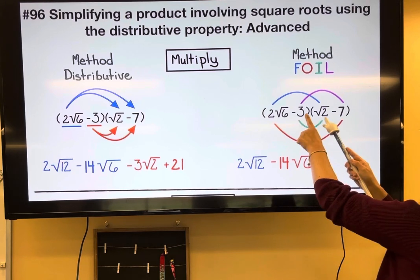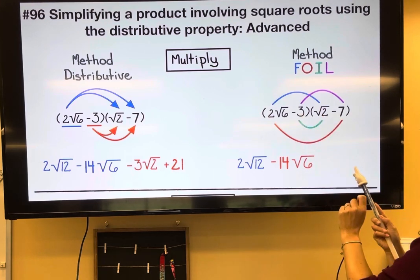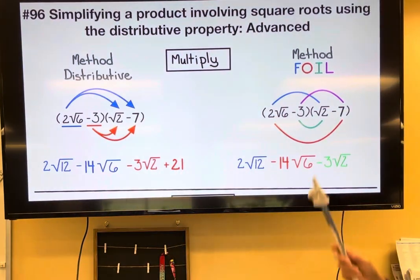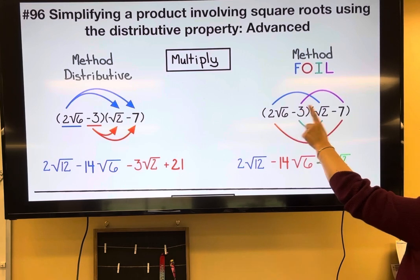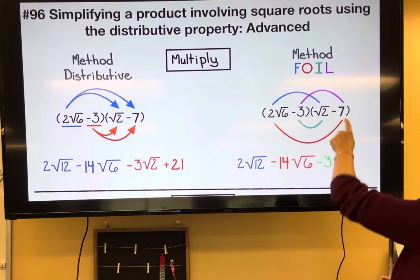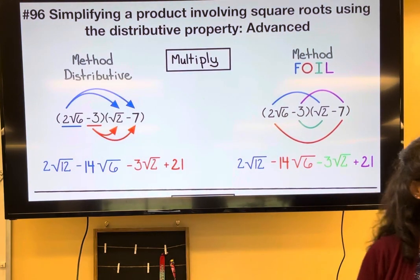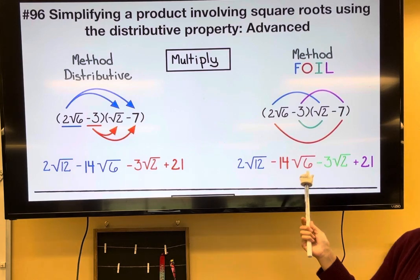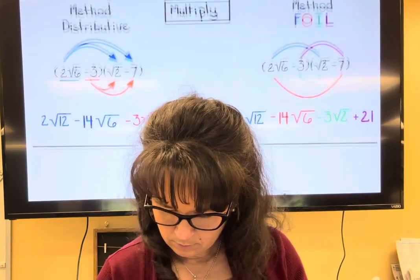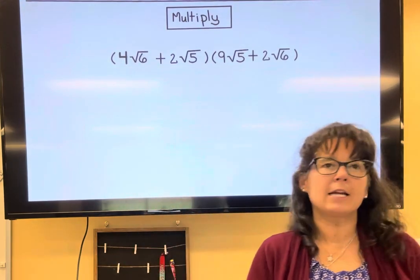For the Inner terms, negative three times root two: negative times positive is negative, giving negative 3 root two. For the Last terms, negative three times negative seven: negative times negative is positive, and three times seven is twenty-one. Comparing our two answers, they're exactly the same — FOIL comes directly from the distributive property.